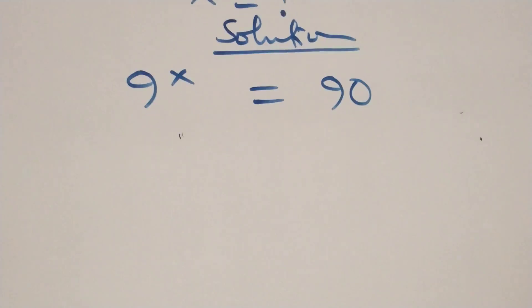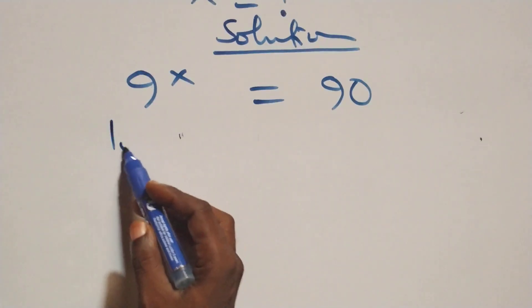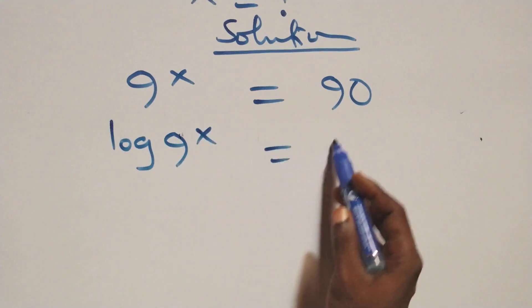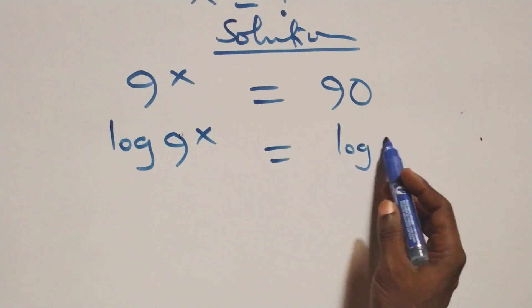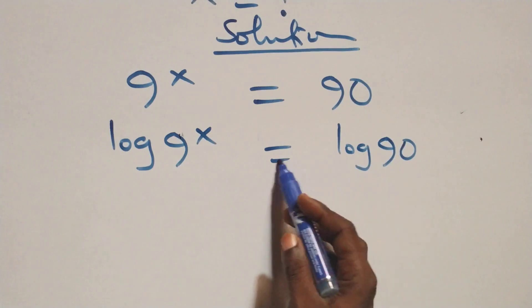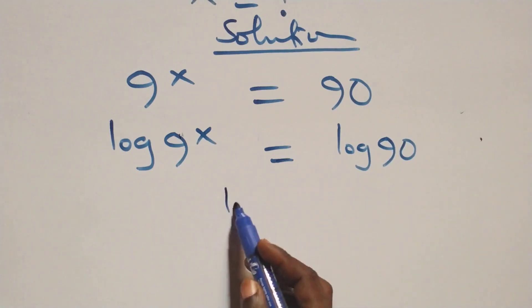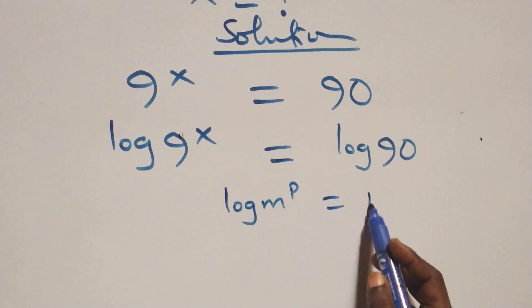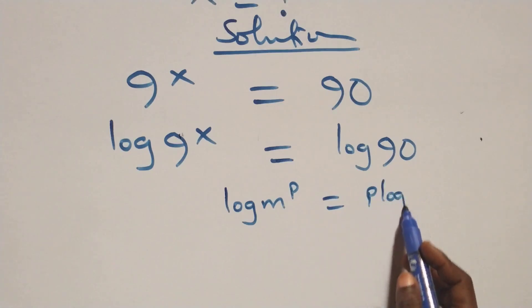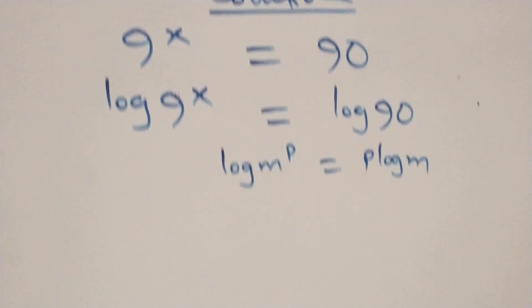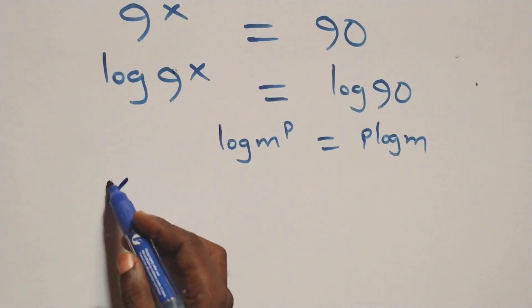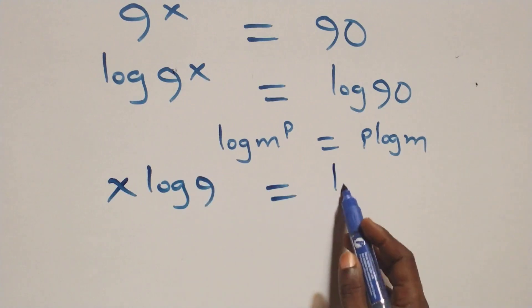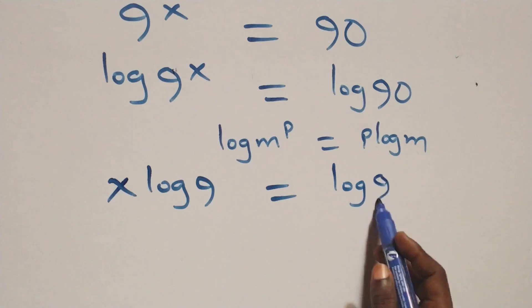We take the log on both sides: log of 9 raised to power x equals log 90. We apply the power rule of logarithm — log m raised to power p is the same as p·log m — so this becomes x·log 9 equals log 90.